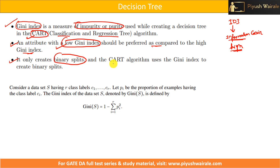One very important point: the CART algorithm only creates binary splits. It uses the Gini Index to create these binary splits. Please remember these three key points — they can ask you a one-mark question based on them: Gini Index is used in CART, low Gini Index is preferred, and CART only creates binary splits.